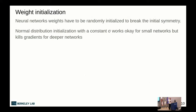Weight initialization is a topic I didn't cover yesterday. When we start a neural network we begin with random weights, but how we choose that initialization matters. If all weights are zero there is no learning — you can verify this by looking at the gradient descent update rule. If all weights are initialized to the same constant, there's no symmetry breaking: every neuron receives exactly the same gradient update and we don't get anywhere. We need to break symmetry using some distribution.